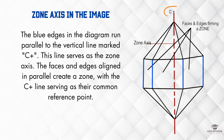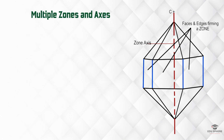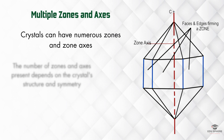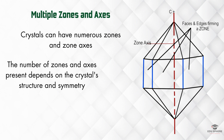The faces and edges that share this parallel alignment form a zone, and the c-plus line acts as their unifying reference point. It's important to remember that crystals can have numerous zones and zone axes. The number of zones and axes present depends on the crystal structure and symmetry. In our quartz crystal example, there could potentially be more zones beyond the one we have identified.